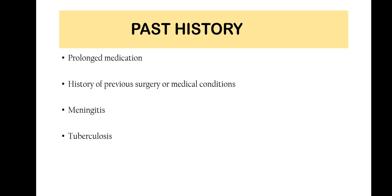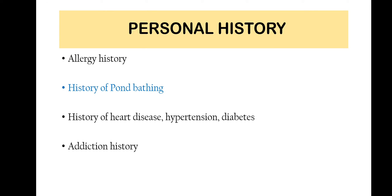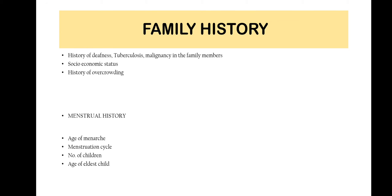Past history covers any medical or surgical condition that has happened previously, including childhood disease followed by a significant asymptomatic period. In personal history, the history of pond bathing is very important. Family history and menstrual history should also be taken, though they are not prominently significant in CSOM.